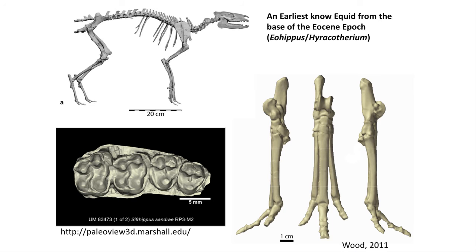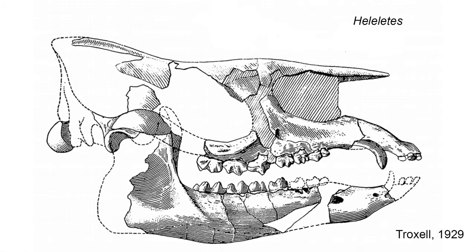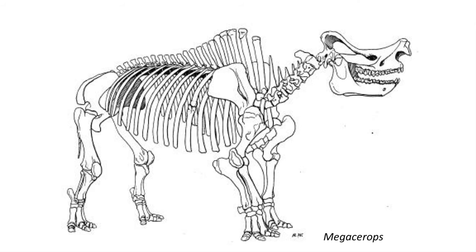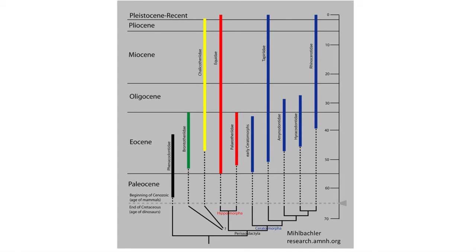The earliest Eocene perissodactyls in North America were the horses (Equidae), followed by the early tapir-like isectolophids, then true tapirs (Tapiroidea), bronotheres — also called titanotheres — and the Rhinoceroidea superfamily, which included a diverse group of rhinos. By the early Middle Eocene, all of these groups were diverse and well represented in the fossil record.